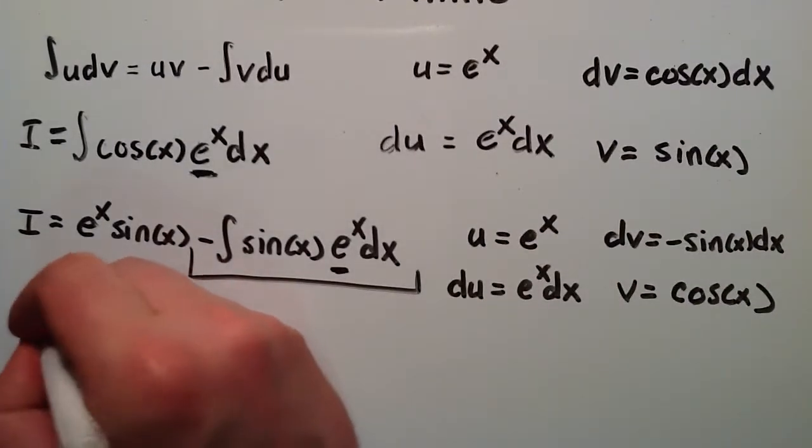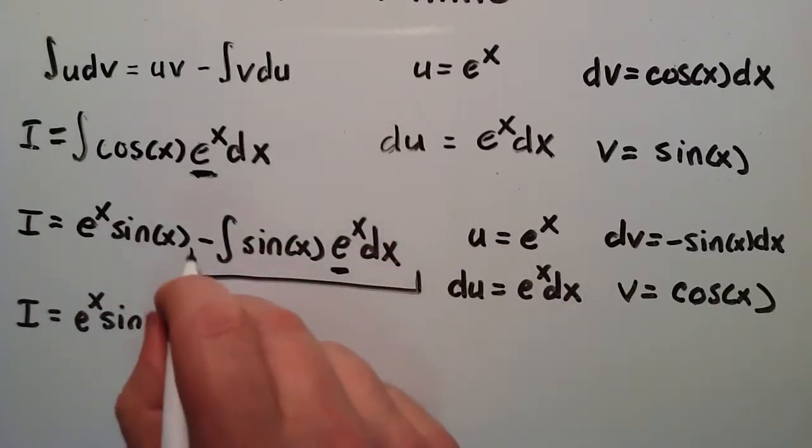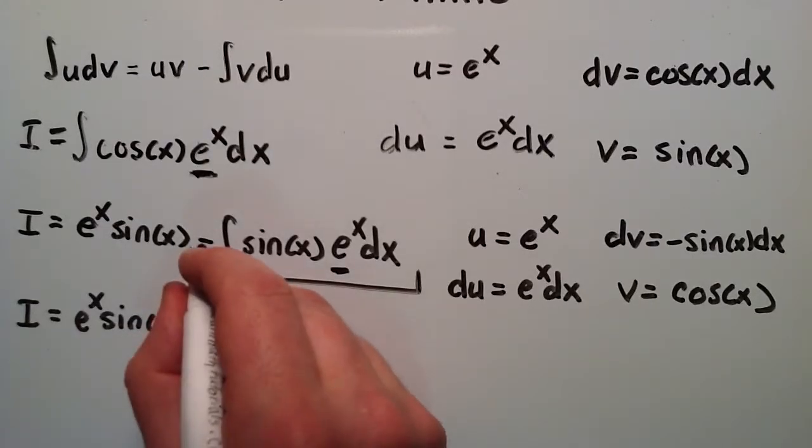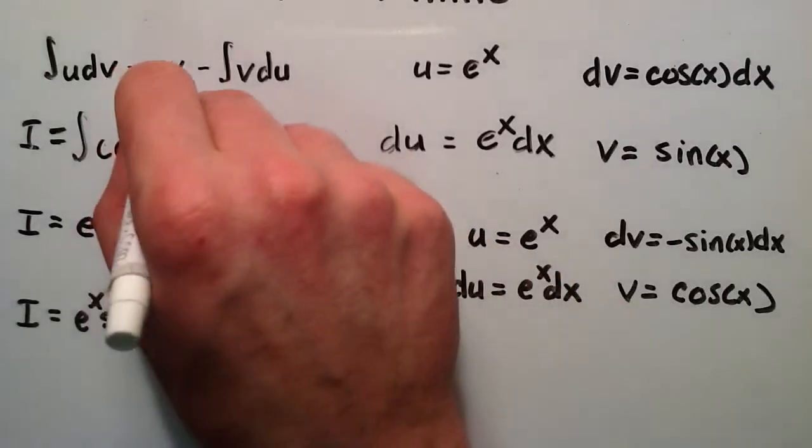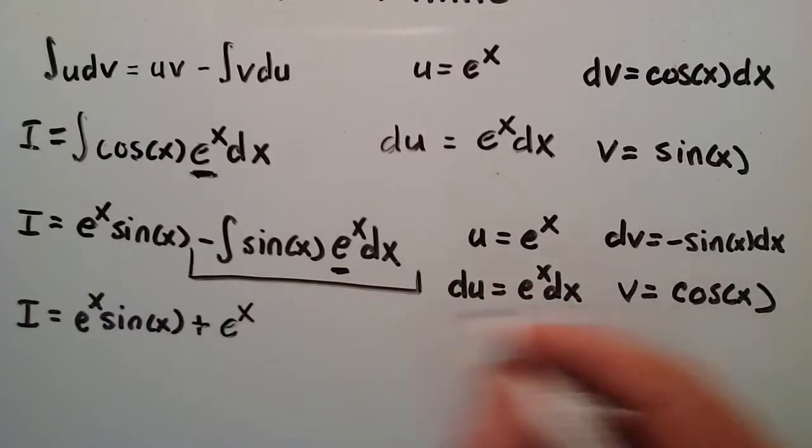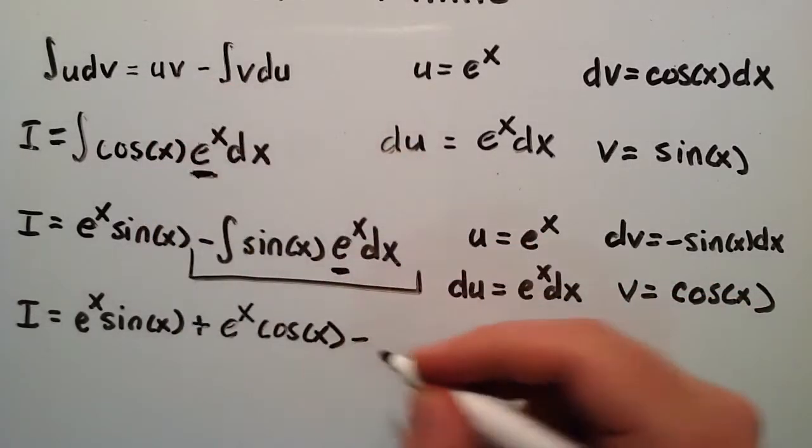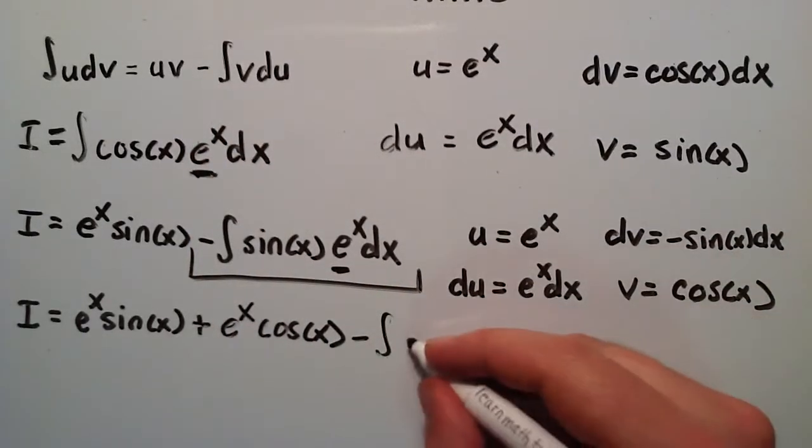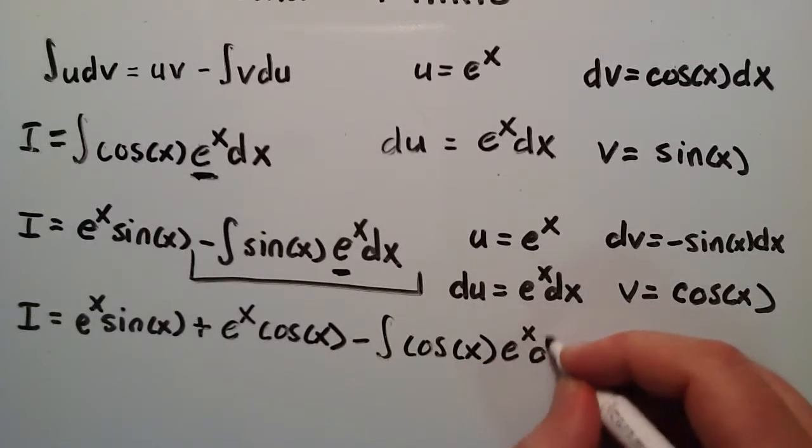So now, i is equal to the first term, e to the x sine x. And since we included the negative here, we just simply add. Since the negative was part of our definition here, we're just going to add the next part to it. And the next part is defined as u times v. This time, u is e to the x, v is cosine x. And then we subtract the integral of v times du. v is cosine x. And du is e to the x dx.